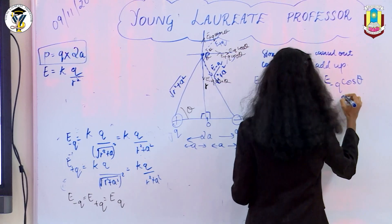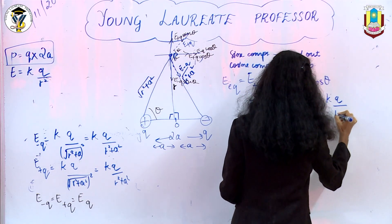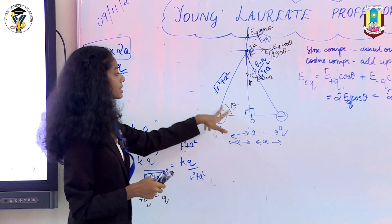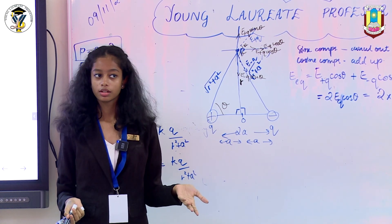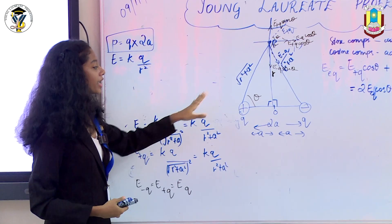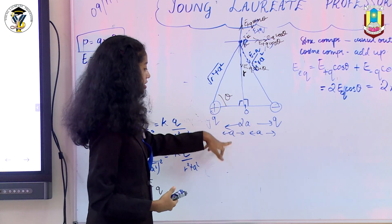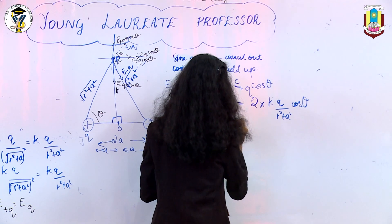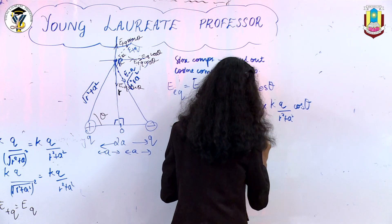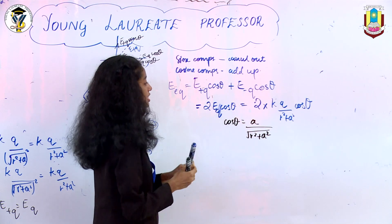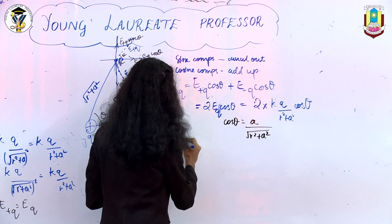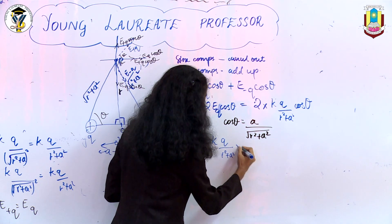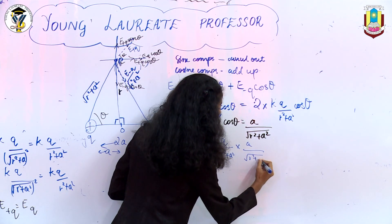Substituting E_q = kq / (r² + a²), we get E_equatorial = 2 × kq / (r² + a²) × cosθ. Now we find cosθ: it equals adjacent side over hypotenuse = a / √(r² + a²). Substituting: E_equatorial = 2kq / (r² + a²) × a / √(r² + a²), which gives 2kqa / (r² + a²)^(3/2).